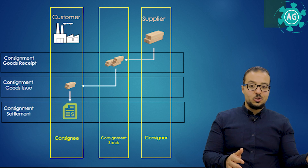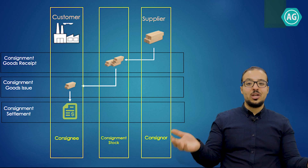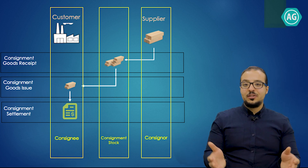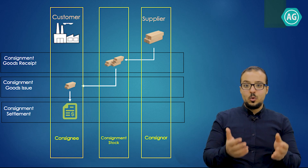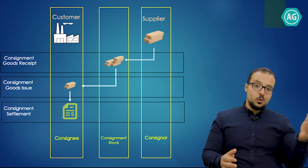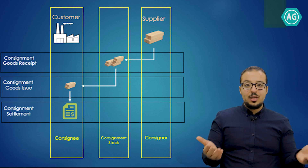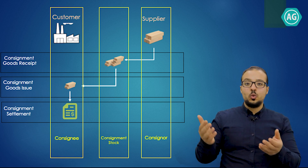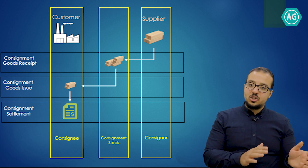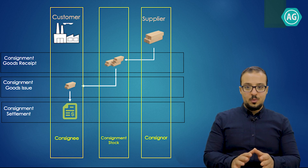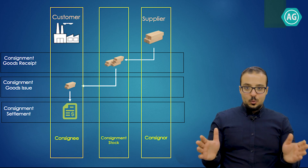The wood inventory is called the consignment inventory, the supplier is called the consigner, and our company is called the consignee. The consignee is happy because it guarantees continuous supply of raw materials, and the consigner is happy because it guarantees the customer will always use their materials. It is a win-win situation.